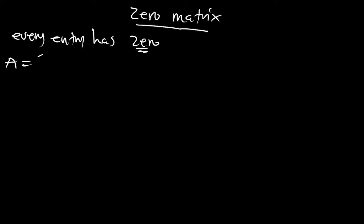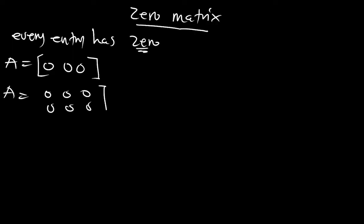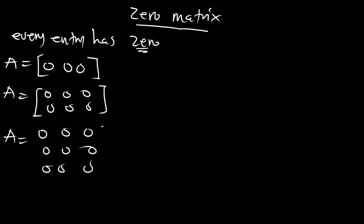For example, A having a matrix [0, 0, 0] is a zero matrix. If A is [0,0,0; 0,0,0], this is a zero matrix. If A is given as this matrix, this is also a zero matrix.